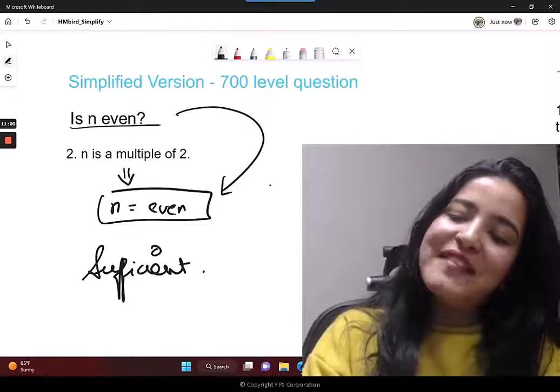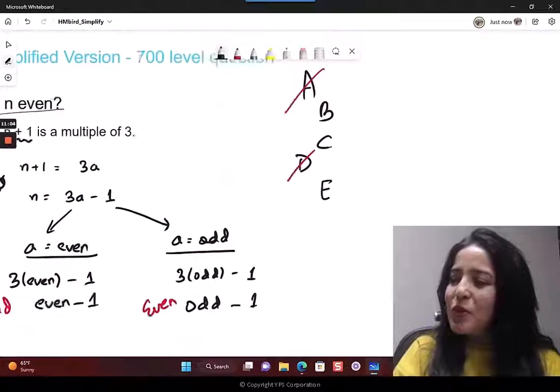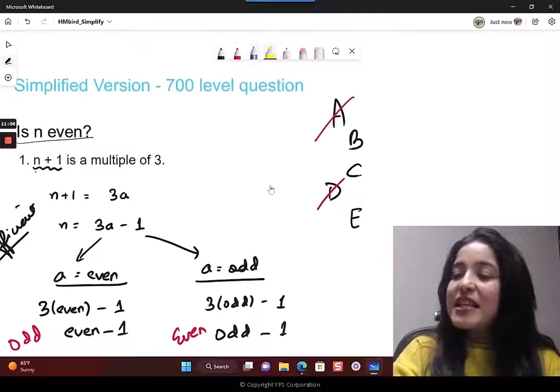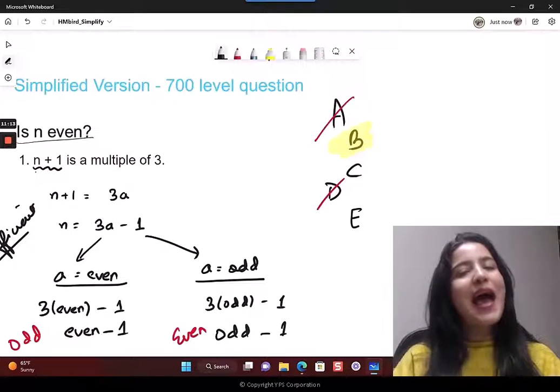And this is precisely what my stem is. This statement then is the easiest statement to ever judge. This is sufficient. Since I know my statement 2 is sufficient alone, my correct answer is choice B. And that's it.